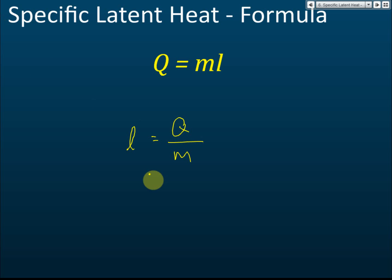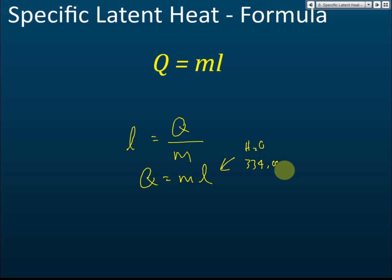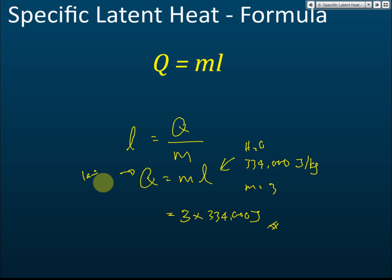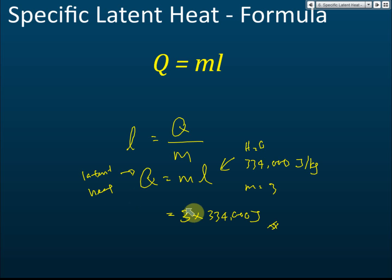So, specific latent heat is how much thermal energy is needed to convert one kilogram of a substance. It can be calculated using Q = mL, and therefore Q is the amount of thermal energy needed to change the state. For example, the specific latent heat of water (H₂O) is 334,000 joules per kilogram. So if the mass is three kilograms, the energy needed is 3 × 334,000 joules. Note that Q here is the latent heat — the energy needed to change state — while L is the specific latent heat.